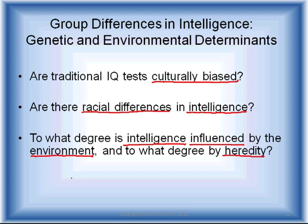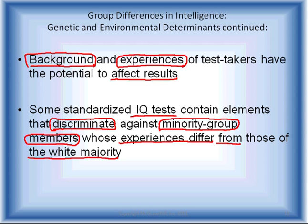Regarding group differences in intelligence and genetic and environmental determinants: are traditional IQ tests culturally biased? Are there racial differences in intelligence? To what degree is intelligence influenced by environment versus heredity? The textbook states that the background and experiences of test takers have the potential to affect results, and some standardized IQ tests contain elements that discriminate against minority groups whose experiences differ from those of the white majority.